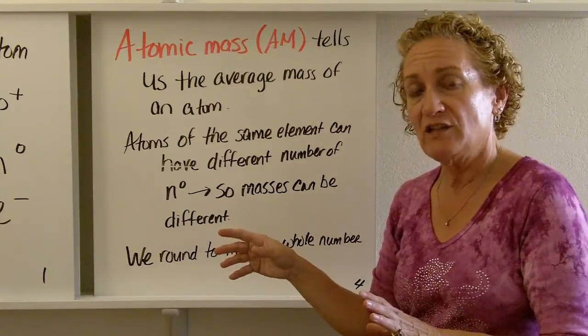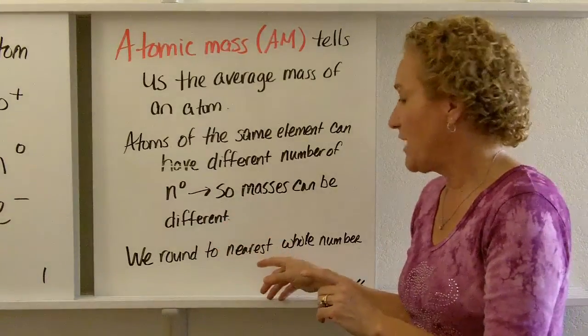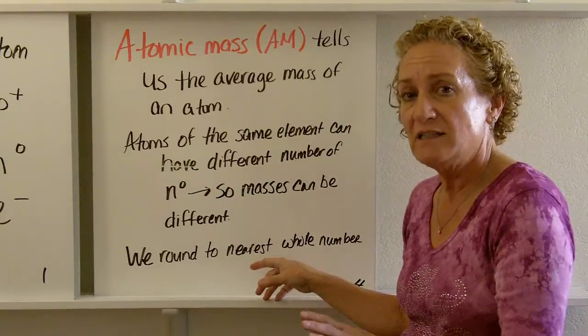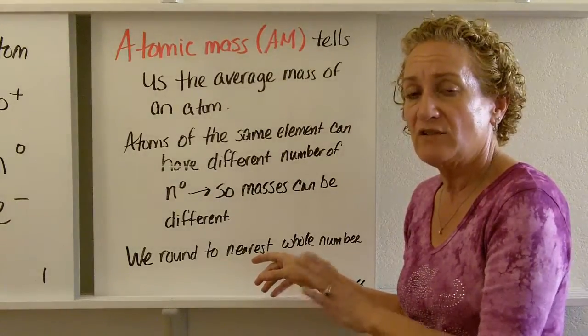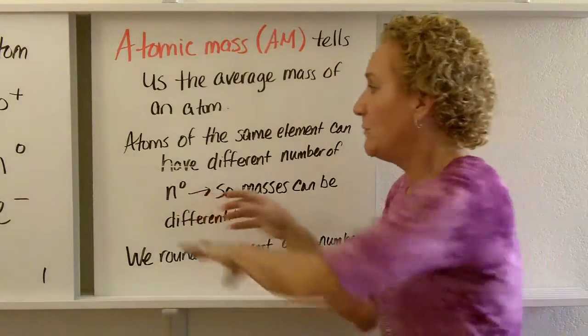When we use atomic mass in a calculation to determine protons, neutrons, and electrons, we're going to round to the nearest whole number. When we use it in stoichiometry, we do not. But when we use it in calculations for protons, neutrons, electrons, for our purposes, we're going to round to the nearest whole number.